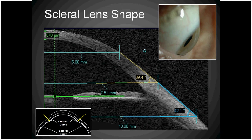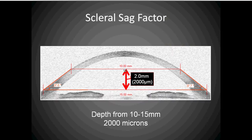The cornea begins to form a straight line or tangent shape at approximately a 10 millimeter cord. That tangent shape runs past the cornea through the limbus and onto the sclera. The average angle at the 10 to 15 millimeter cord is approximately 38 degrees, and at that angle the depth of the eye shows a 2,000 micron scleral sag factor.